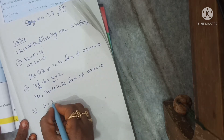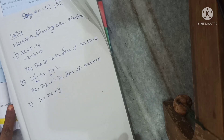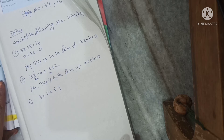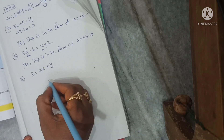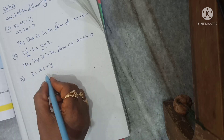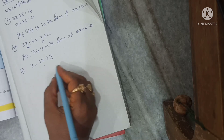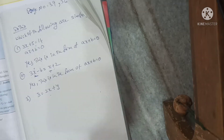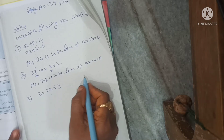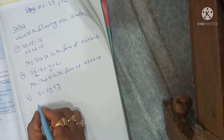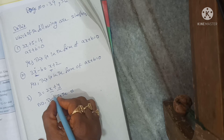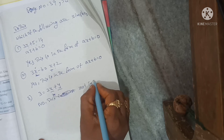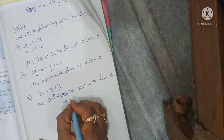Third one: 3 is equal to 2x plus y. Here there are two variables. So this is no — this is not in the form of AX plus B is equal to 0.